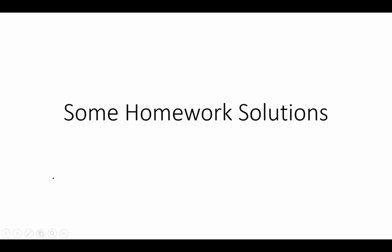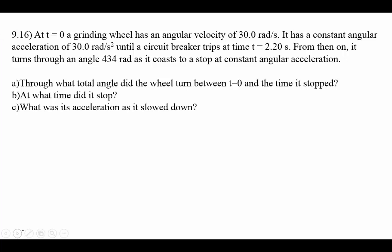Let's take a look at some of the homework problems that you requested. Here's question number 16 out of chapter 9. At t equals zero, a grinding wheel has an angular velocity of 30 radians per second, so omega naught equals 30 radians per second. It has a constant angular acceleration, so alpha equals 30 radians per second squared, until a circuit breaker hits at 2.2 seconds.